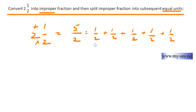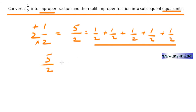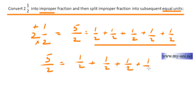So you can write half five times — one, two, three, four, five — or you can write five halves this way. Five halves means half five times, as simple as that.